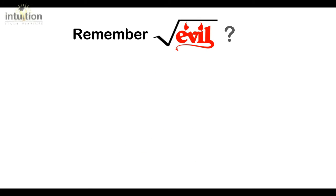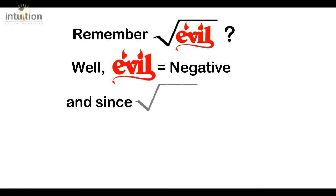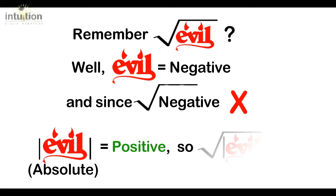Remember when we took the square root of evil? Well, we can all agree that evil is an inherently negative concept. And since we can't take the square root of a negative value, what we can do is we can make evil positive by putting some absolute value signs around it. So we have absolute evil.